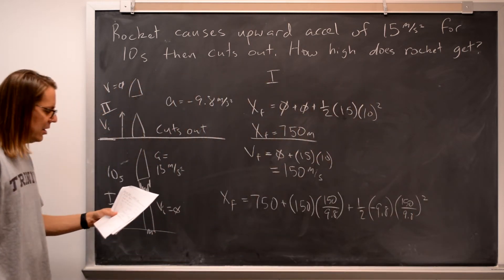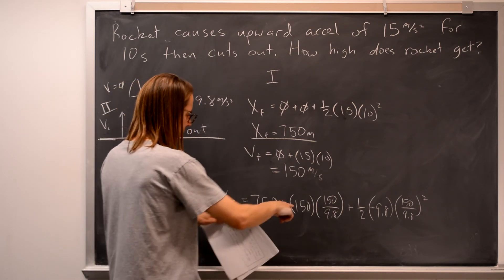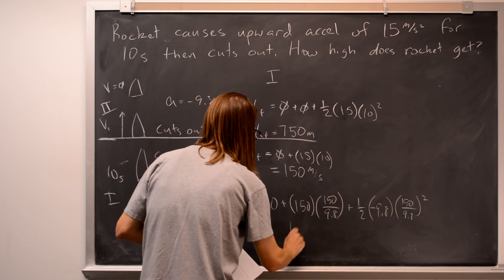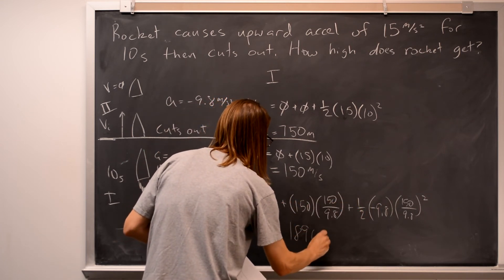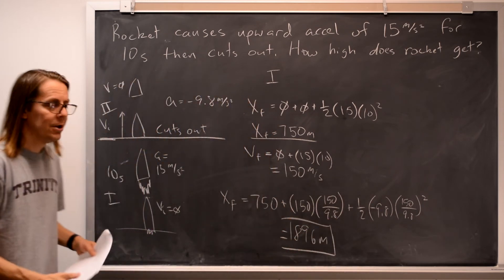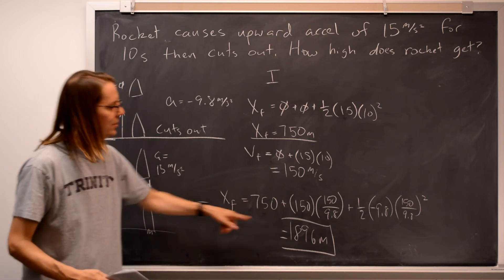So you add all that up, and you get, let's see, this is, you get these together, like 3,000 and something, this is minus 1150, and you get 1896 meters. And that's the full answer, because in this long equation, this standard kinematics equation, we did include the initial phase.